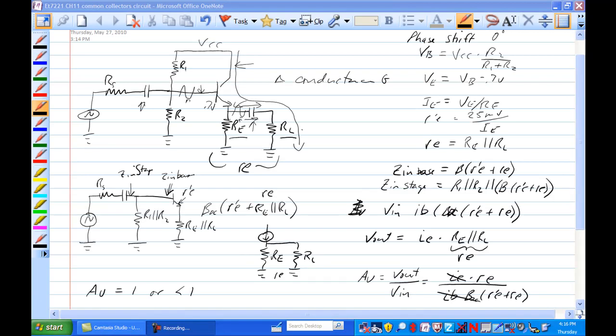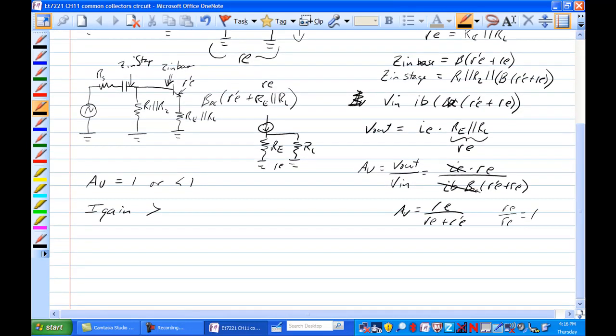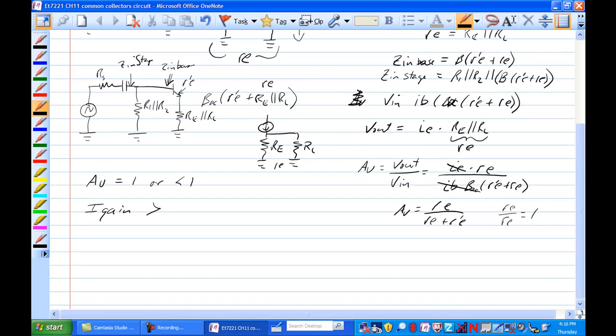Another thing we need to look at is the Z-out. Basically what it is is a Thevenin resistance. You remember the maximum power transfer theorem which said that maximum power transfer